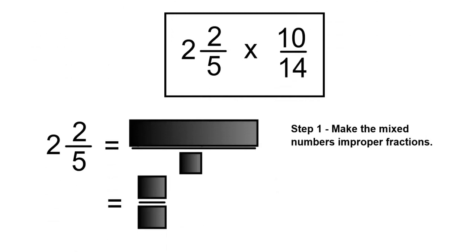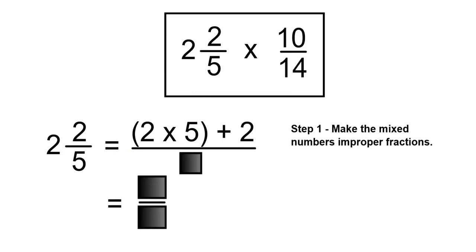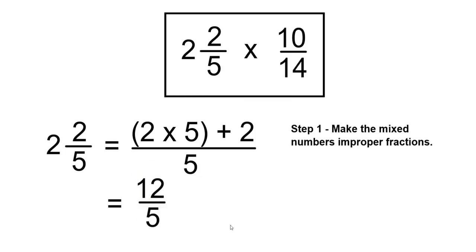2 and 2 over 5 times 10 over 14. Step 1 is to make the mixed numbers improper fractions. To do this, I'm multiplying the whole number, which is 2, by the denominator, which is 5, then adding the numerator, which is 2. Put this over the denominator, which is 5. So 2 times 5 is 10, and 10 plus 2 is 12, over the denominator of 5. So 2 and 2 over 5, as an improper fraction, will be 12 over 5.